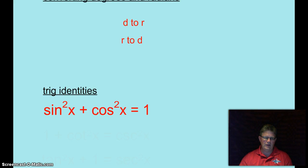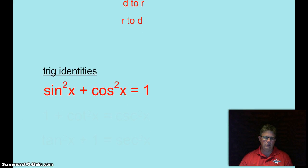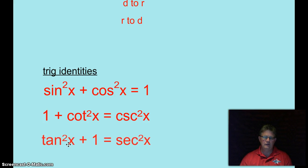Alright, if you divide each term by sine squared x, you will get 1 plus cotangent squared x equals cosecant squared x. If you divide each term by cosine squared x, you will get tangent squared x plus 1 equals secant squared x.